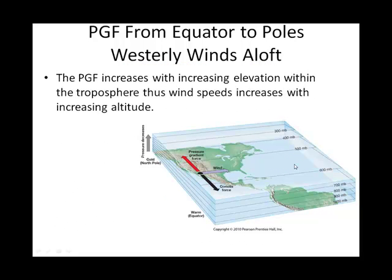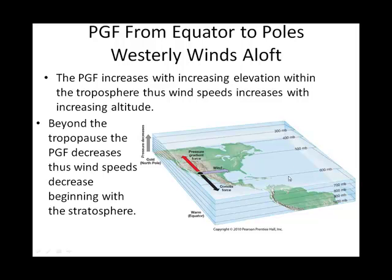Wind speed increases as you go up in the troposphere, but as you enter the stratosphere, the winds begin to decrease. The reason they are westerly up there has to do with starting at zero degrees latitude, the intertropical convergence zone, where we have our warmest air. Warm air tends to be low pressure, but here think of warm air as fluffing out. Looking at the pressure compared to the poles — poles have cold air at the Earth's surface, which is going to be high pressure.